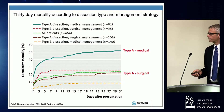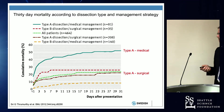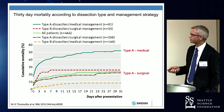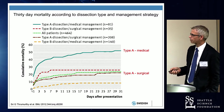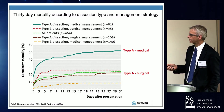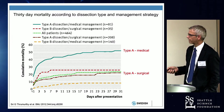This graph shows the mortality for a type A dissection treated medically. You can see within the first day, if we don't do anything, it's almost 20% mortality, and after a month it's over 50% mortality. Whereas if we operate, the mortality is distinctly reduced.